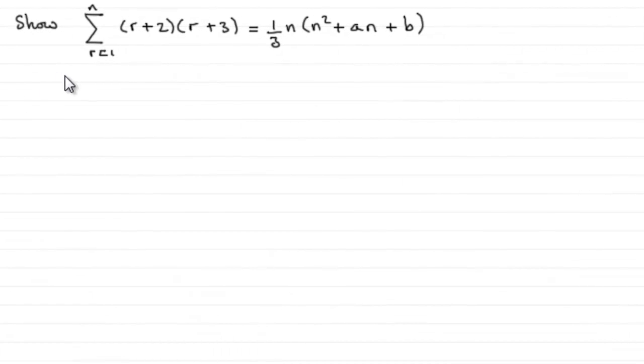Okay, so for this question we've got to show that the sum of (r+2)(r+3) going from r equals 1 to n equals one-third n multiply by n-squared plus a·n plus b. We can find out what the values of a and b are.